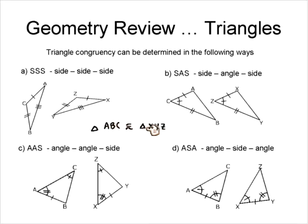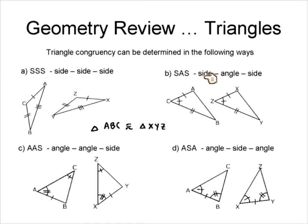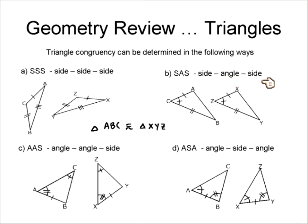So we would write: triangle ABC is congruent to triangle XYZ by Side-Side-Side. There's also Side-Angle-Side (SAS). We go in order — side, angle, side — starting at A. That same pattern, side-angle-side, applies on the other triangle as well. So we would say these triangles are congruent by Side-Angle-Side.